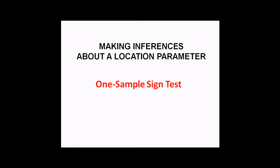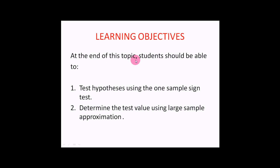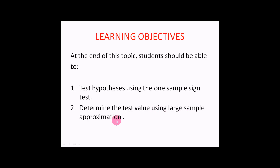Making inferences about allocation parameter using one-sample sign test. At the end of this topic, students should be able to: first, test hypothesis using the one-sample sign test; second, determine the test value using large-sample approximation.